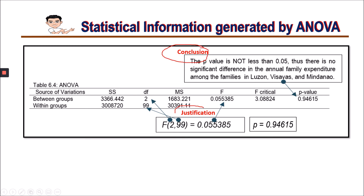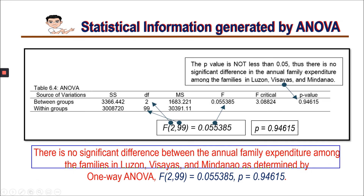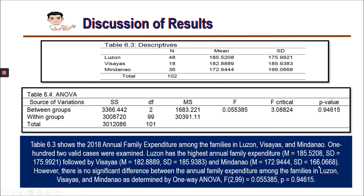So our conclusion and justification in sentence form is: there is no significant difference in the annual family expenditure among the families in Luzon, Visayas, and Mindanao as determined by One-Way ANOVA. To synthesize everything, the complete discussion reads: Table 6.3 shows the 2018 annual family expenditure among the families in Luzon, Visayas, and Mindanao. 102 valid cases were examined. Luzon has the highest annual family expenditure, followed by Visayas and Mindanao. However, there is no significant difference among the three groups as determined by One-Way ANOVA.